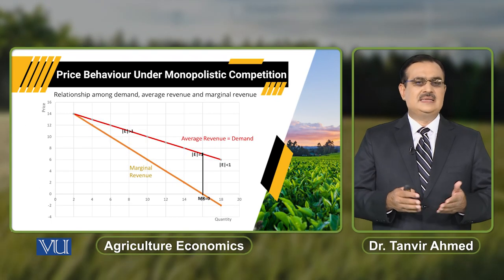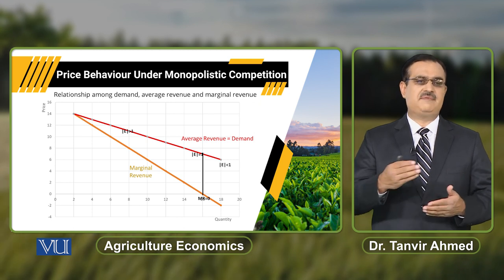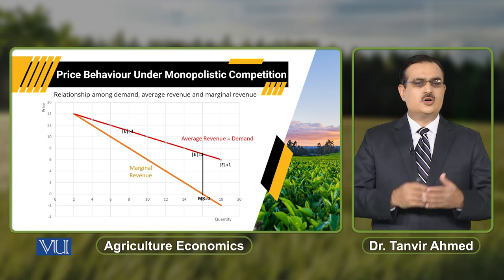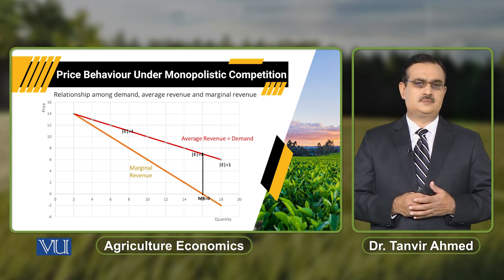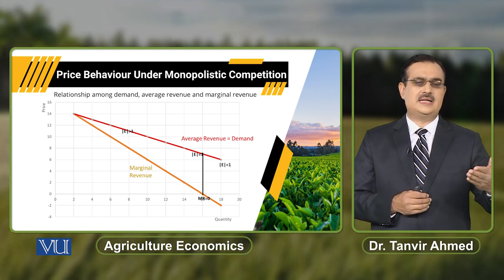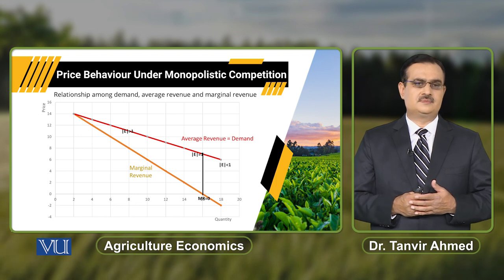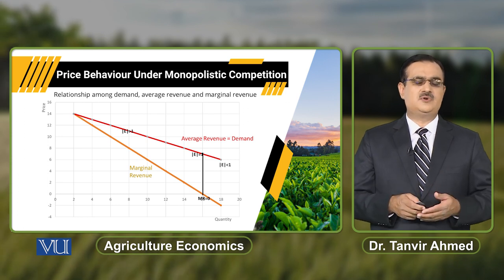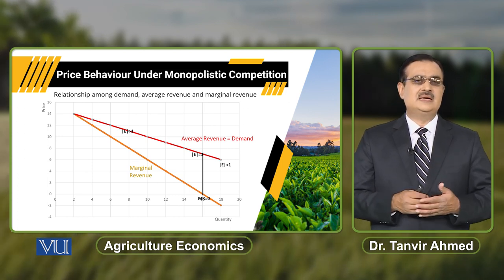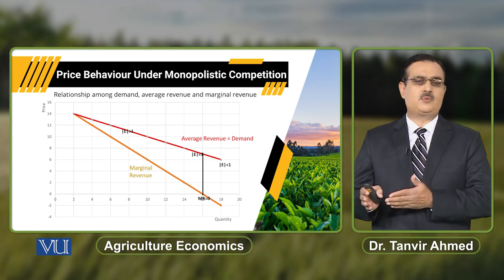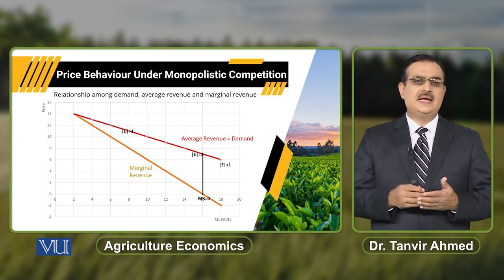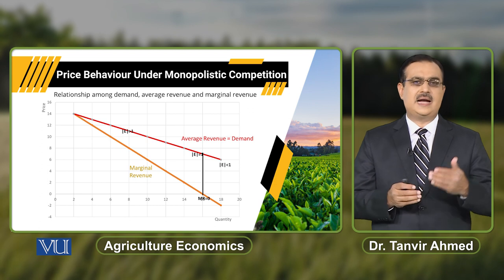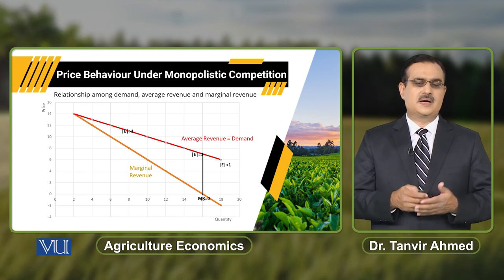There is an association between average revenue and marginal revenue. The average revenue curve for the firm's output also depicts the demand for the firm's output. The demand for the firm's output is a downward sloping curve. The marginal revenue equals zero at a specific point on the curve. The elasticity of demand is different at different points of a linear demand curve — the value of elasticity varies at different points of the demand curve.